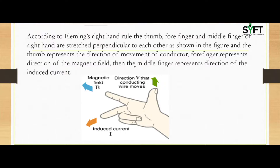Fleming's right hand rule is used to find the direction of the induced electromagnetic field generated. According to Fleming's right hand rule, the thumb, forefinger, and middle finger of the right hand are held perpendicular to each other, as shown in the image.